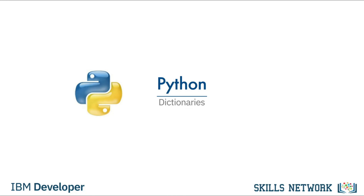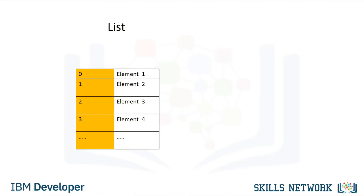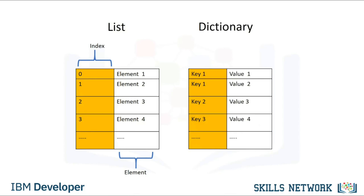Let's cover dictionaries in Python. Dictionaries are a type of collection in Python. A list has integer indexes — these are like addresses — and a list also has elements. A dictionary has keys and values. The key is analogous to the index — they are like addresses, but they don't have to be integers. They are usually characters. The values are similar to the elements in a list and contain information.